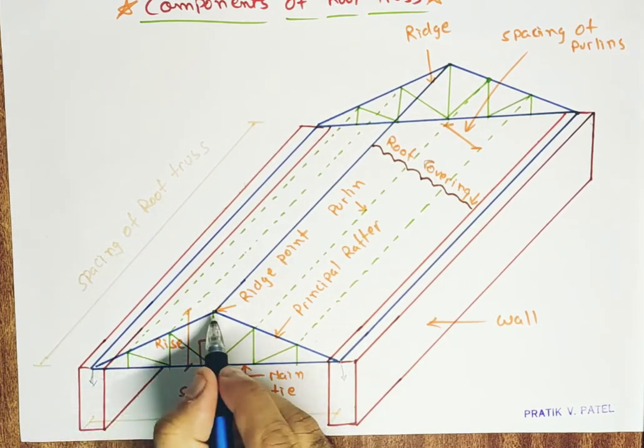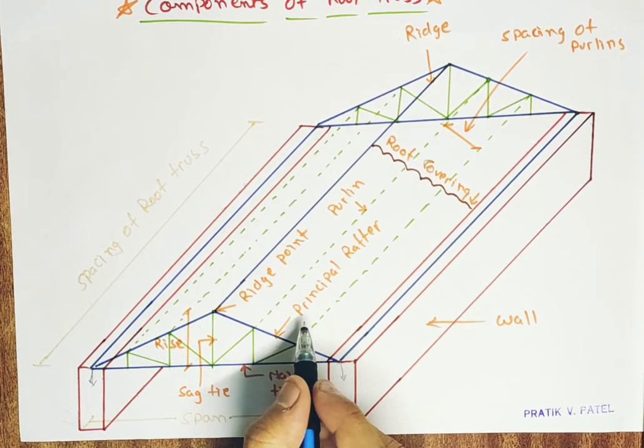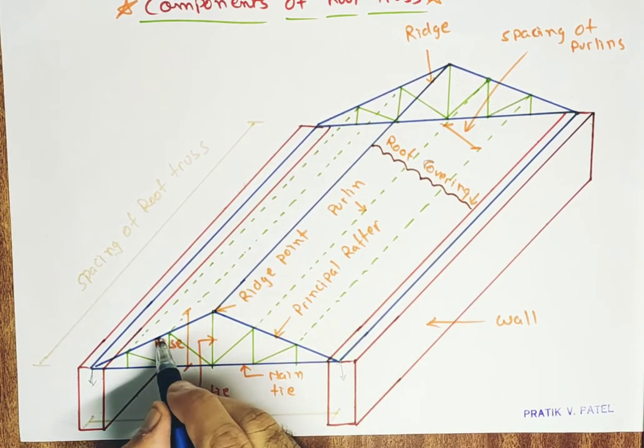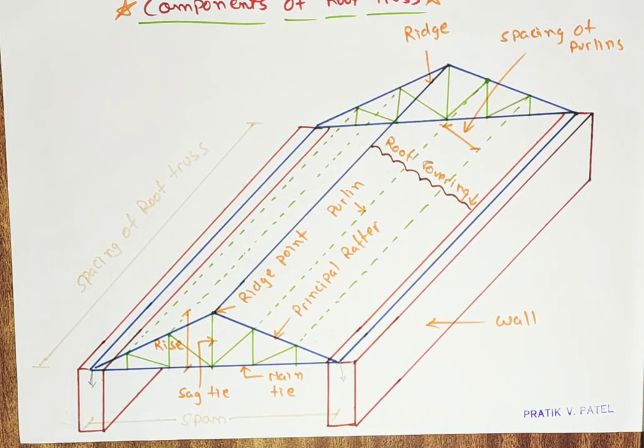And this diagonal line connecting this end to the apex is known as principal rafter. This one, this one, this one and this one. This means it has four principal rafters.